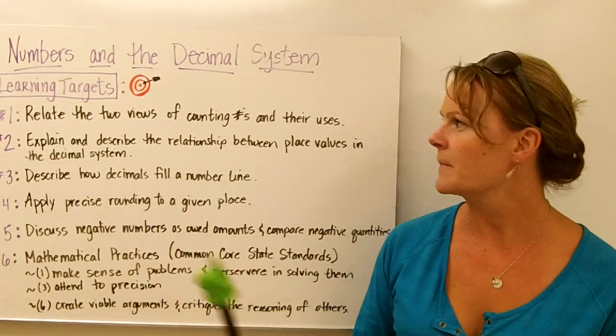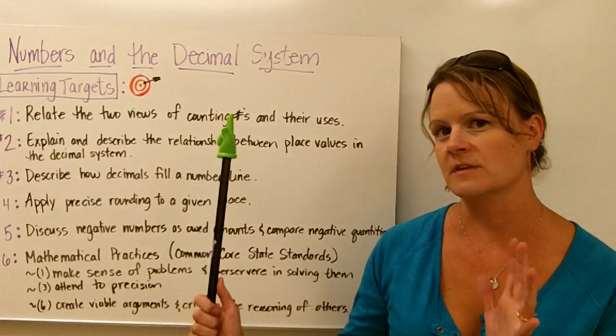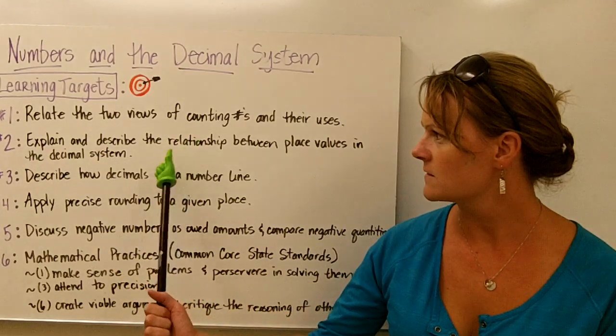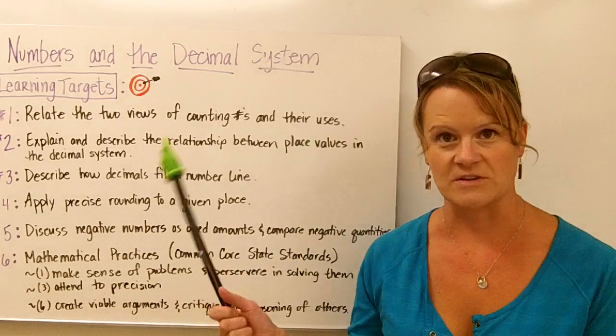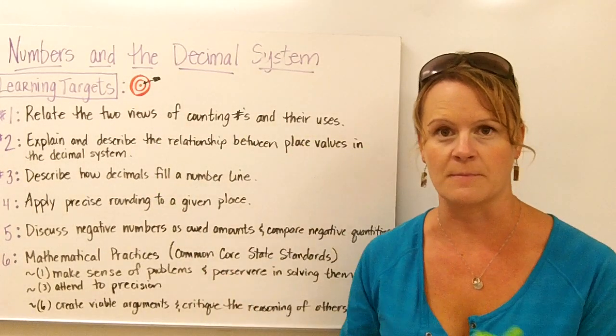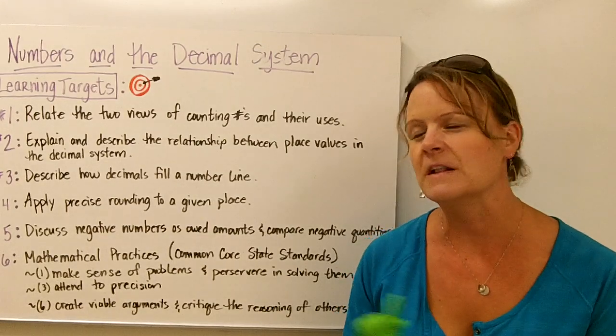One thing we're going to talk about is the counting numbers and their uses, and really the two views of the counting numbers. We're going to be able to explain and describe the relationship between place values and the decimal system. We'll also call that the base 10 system and why that's the case.